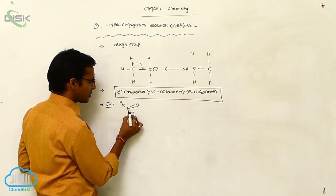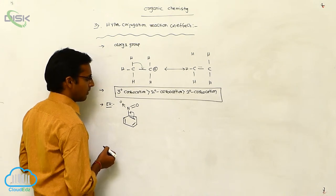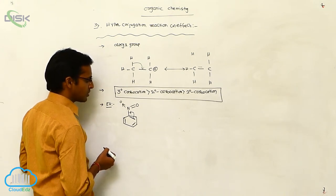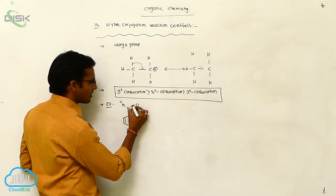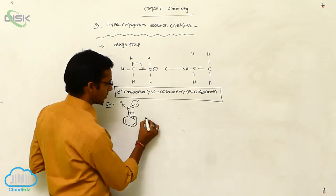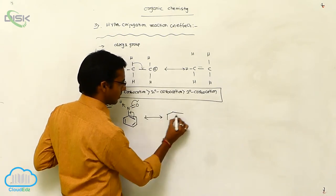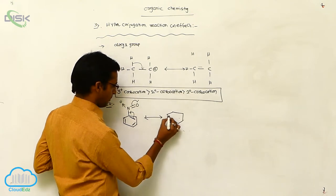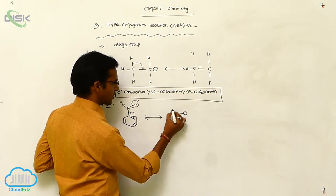This pi bond is shifted here. Whenever the pi bond is shifted, one of the pi bonds moves to the adjacent position. You are getting a negative charge; we can represent a positive charge like this — this is a co-ordinated compound.